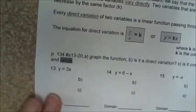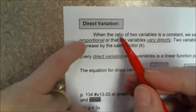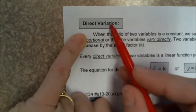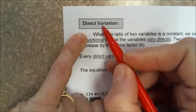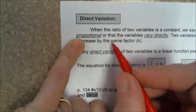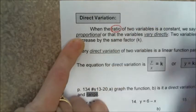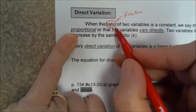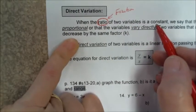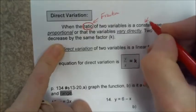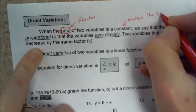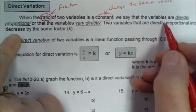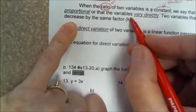On the next page we're going to talk about direct variation. This was a topic from Algebra 1, and we're doing a different kind of variation soon which is like the opposite of direct variation. Direct variation has to do with the ratio — a ratio is a fraction — when the ratio of two variables is a constant. Constant means always the same value. We say that the variables are directly proportional, or that they vary directly.